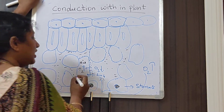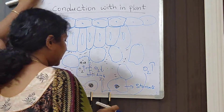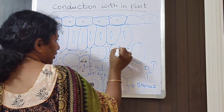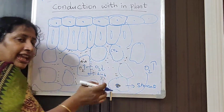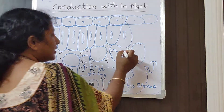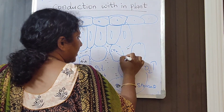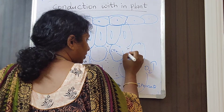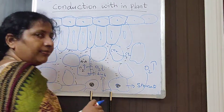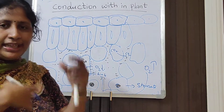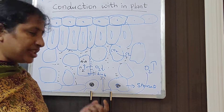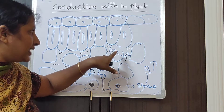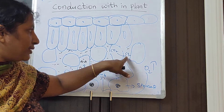By the same principle, carbon dioxide also diffuses. Oxygen is utilized inside the cell and carbon dioxide is produced. So the concentration of carbon dioxide inside the cell is more and outside is less. By diffusion, carbon dioxide comes outside the cell — high to low.